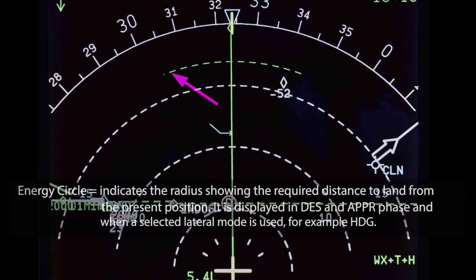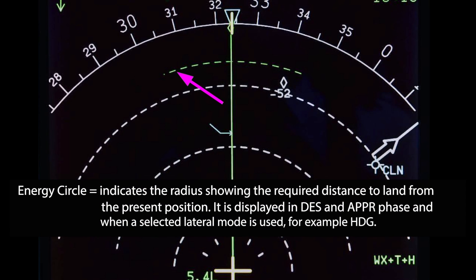Now we come to something we don't find very often in our simulators — however, should this appear, the so-called energy circle, at least you've heard about it. This circle indicates the radius showing the required distance to land from the current aircraft position. It's available in the descent and approach phase, and also when a selected lateral mode is used, for example heading.